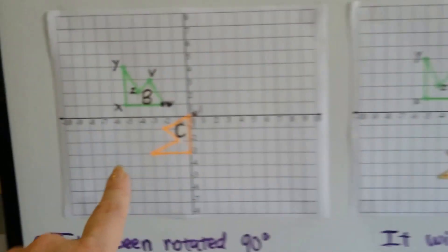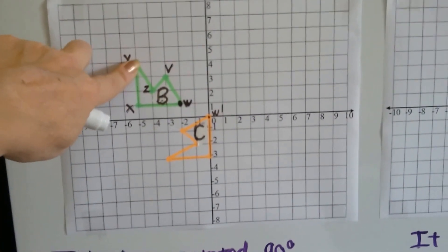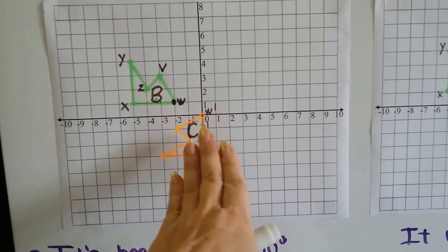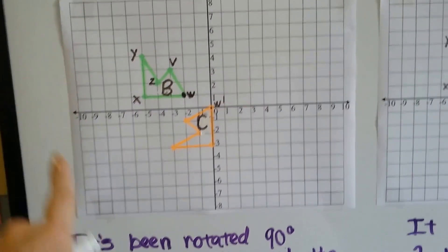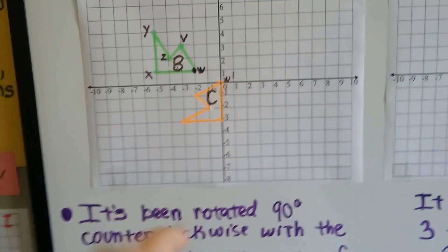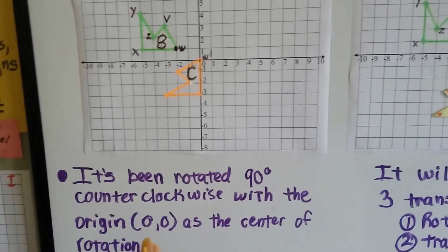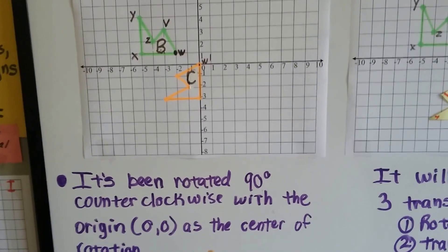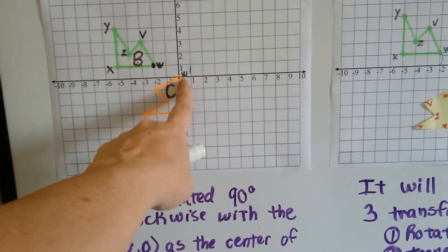Looking at this, you can see that this is the tall peak and this is the lower peak. It turned, and this is counterclockwise — it's going the opposite of a clock. So it's been rotated 90 degrees counterclockwise with the origin 0,0 as the center of rotation right here.